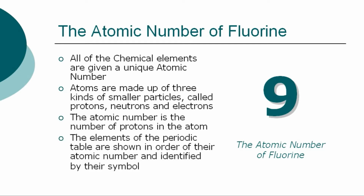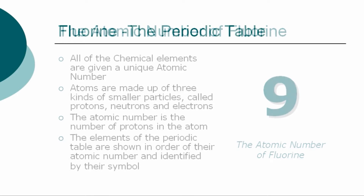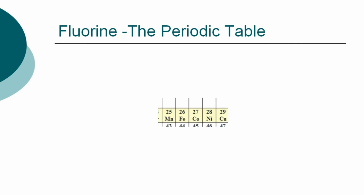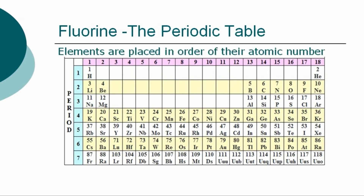The chemical elements of the periodic table are shown in order of atomic number and identified by their symbol. The periodic table is a chart showing the symbols and the atomic numbers of all known elements, such as fluorine, in one large grid. The chemical elements are placed in order of their atomic numbers. Atomic numbers increase as you move across a row, called a group, or down a column, called a period.